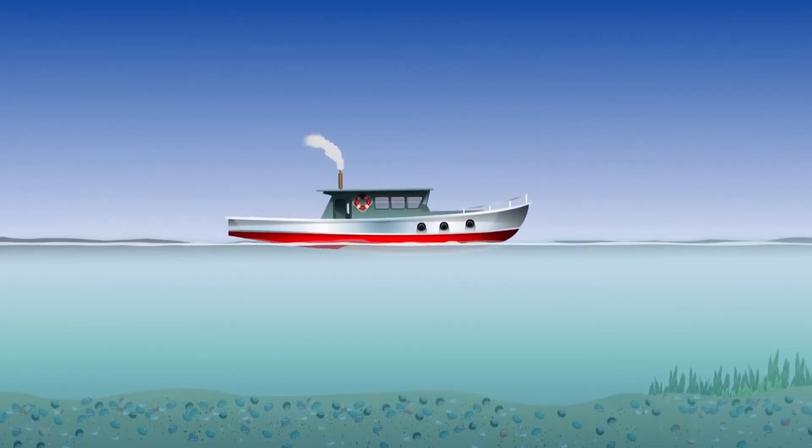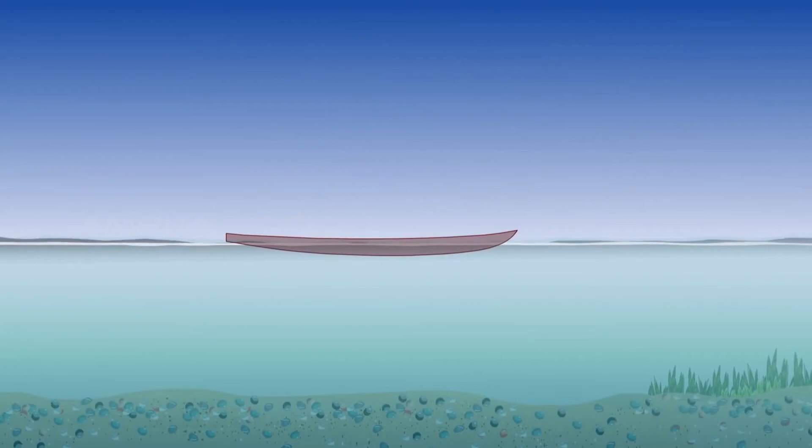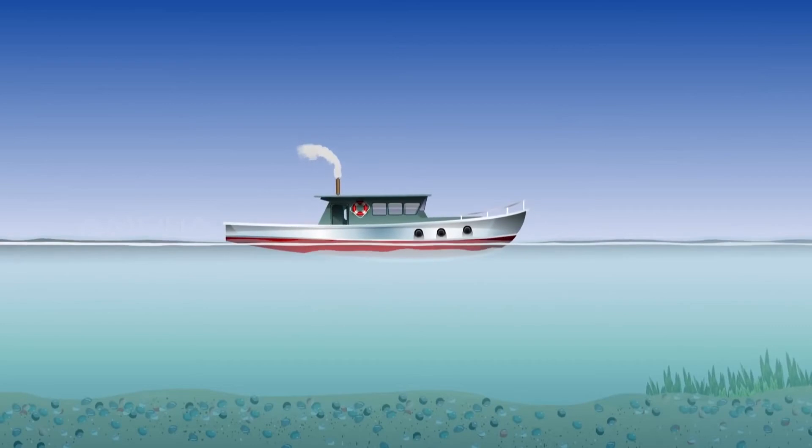An iron ship floats as it is hollow, filled with air and occupies more volume in water and its density is less than water. Thus the upthrust exerted by water on the ship is greater than the weight of the ship letting it float.